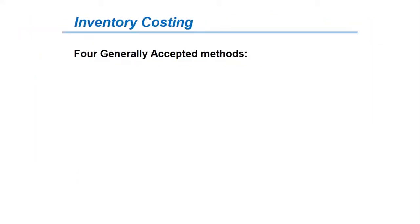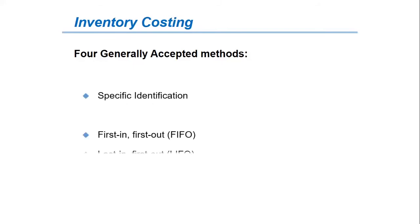There are four generally accepted methods for assigning costs to ending inventory and cost of goods sold: specific costs, first-in first-out or FIFO, last-in first-out or LIFO, and average cost.